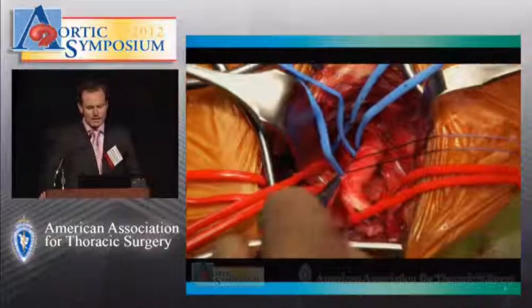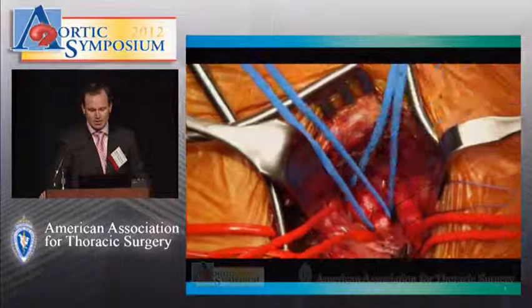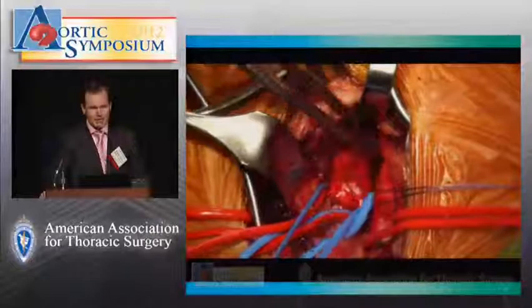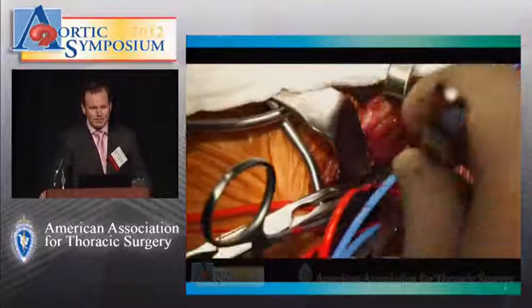We use a small supraclavicular incision and approach the vessel between the two insertions of the sternocleidomastoid muscle. We extensively prepare the left common carotid artery, the left vertebral artery, and the left subclavian artery down to the level of the aortic arch.